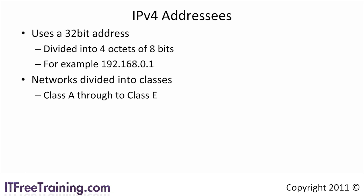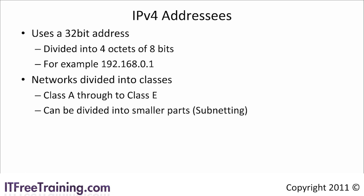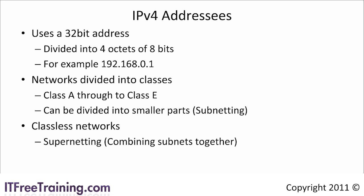These networks can be broken down into smaller parts in a process called subnetting. IP version 4 since it was originally introduced has been improved and developed. The system of classes puts limits on the way networks could be designed. Since then, classless networks have been added which allow you to change the way networks are designed. They introduced a system called supernetting which allows you to combine multiple networks together.